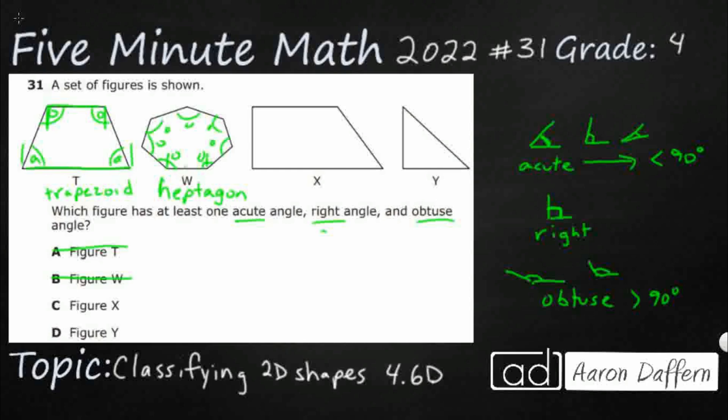So this is also a trapezoid, but this is what we call a right trapezoid. It still only has one set of parallel lines. That's what makes a trapezoid a trapezoid. A quadrilateral with one set of parallel lines. Still just got two bases, top and bottom, that are parallel. But this line over here on the left is not slanted. Oh, look what I've got. I've got two right angles.